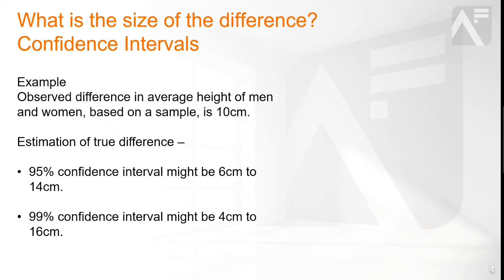When an analyst has determined that the difference they've observed is unlikely to be pure chance, they may then want to know more about the size of the difference. For this, they measure confidence intervals, which is a range between which they can have reasonable certainty that the true difference lies.